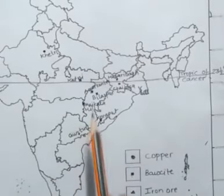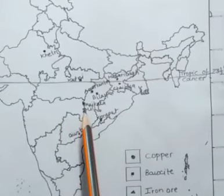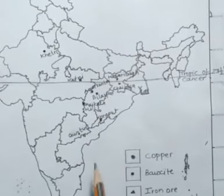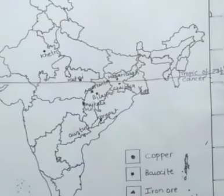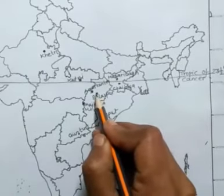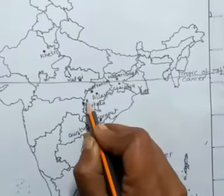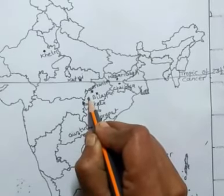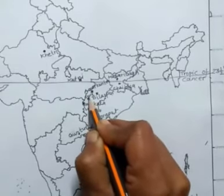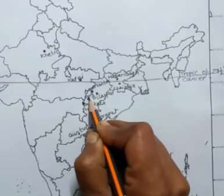Now we mark the main iron ore mines of India, representing them with a small triangle. The first iron ore mine is in Durk, Chhattisgarh. The second is Chandrapur in Maharashtra.